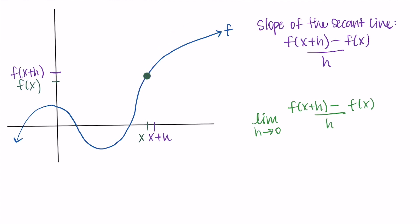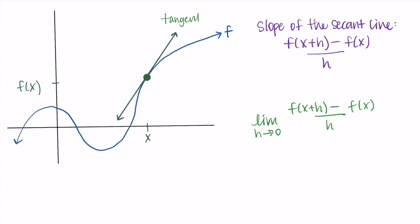By sending h to zero, this means the two points are as close as possible. And once this happens, once the points are as close as possible, we're left with what is called a tangent line. So tangent also comes from a Latin word meaning to touch, and so this is the line that is touching that point at just one spot and it perfectly represents the slope of the function at that point.